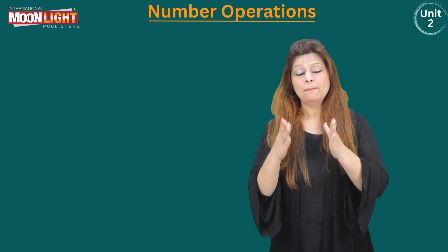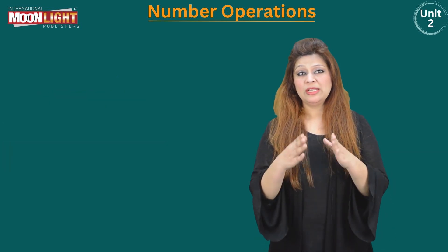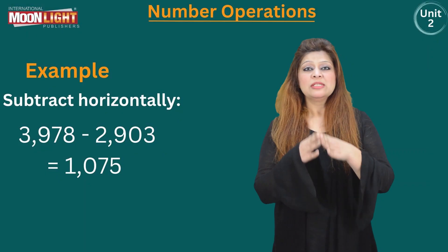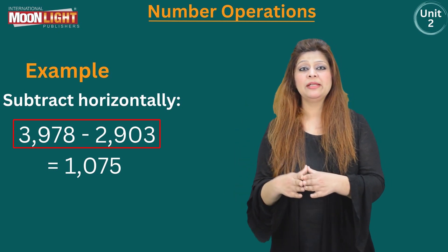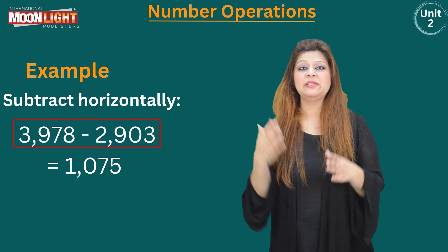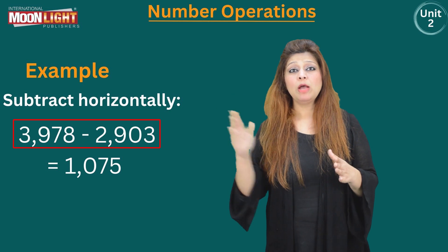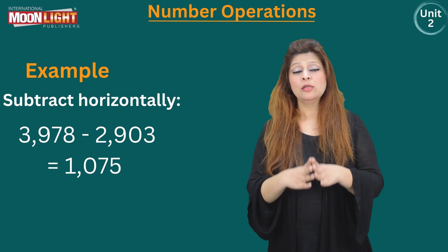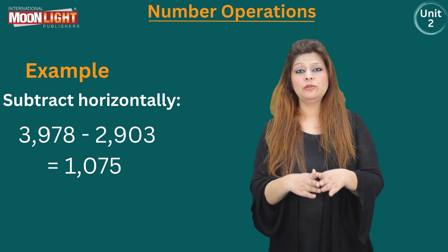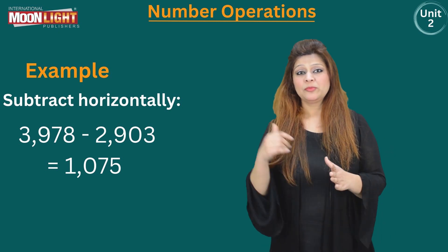Now I will solve an example of subtraction without borrowing, solved horizontally. The statement is: subtract horizontally 3,978 minus 2,903. You can see it is laid out like a floor — in a horizontal direction. I write an equality sign and will write the answer in the given box. First I subtract the numbers at the ones place.